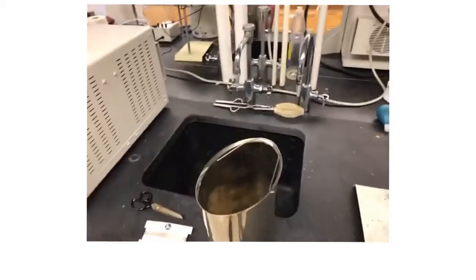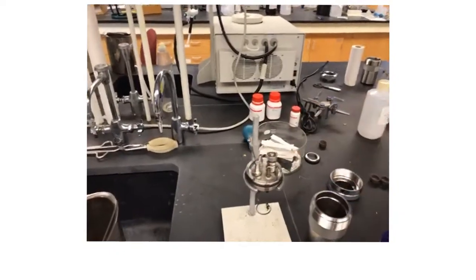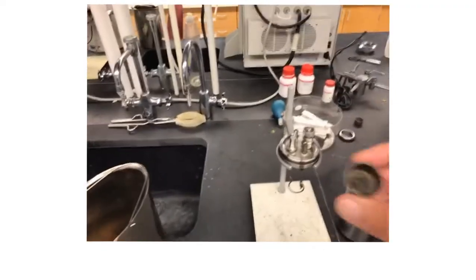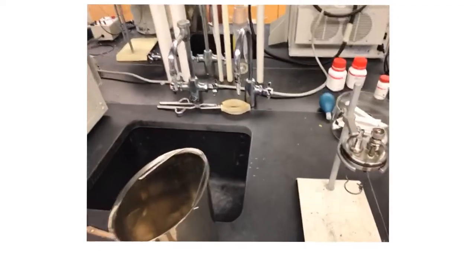What we would do is take our crucible. Usually we'd want to wear gloves. We'd want to make sure this is good and clean. Rinse it out with water, maybe soap, dry it out, rinse it with some acetone. Wipe it out real good with a chem wipe in between trials. You'll see some soot forms on the inside.